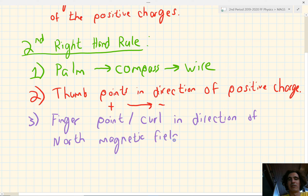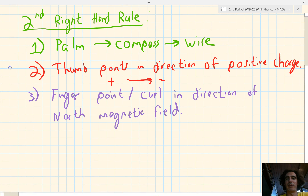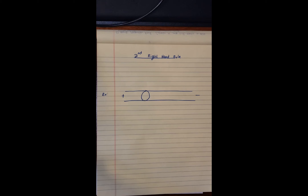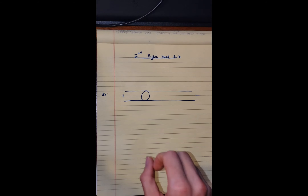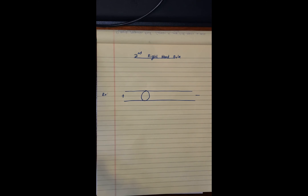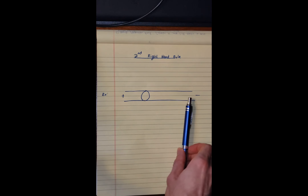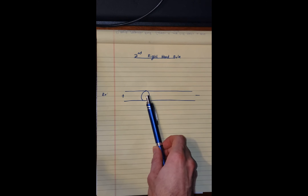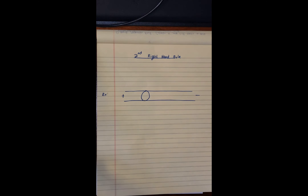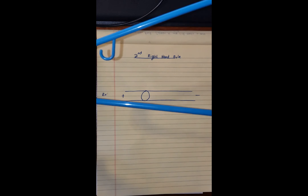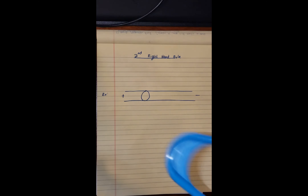Let's look at a couple of examples on paper. I figured I'd put my former skills as a hand model to good use — we're going to use this to look at the second right-hand rule. In this example, we have a wire with a positive charge on the left, negative charge on the right, and a compass on top of the wire. To represent a wire, we're going to use a hanger.